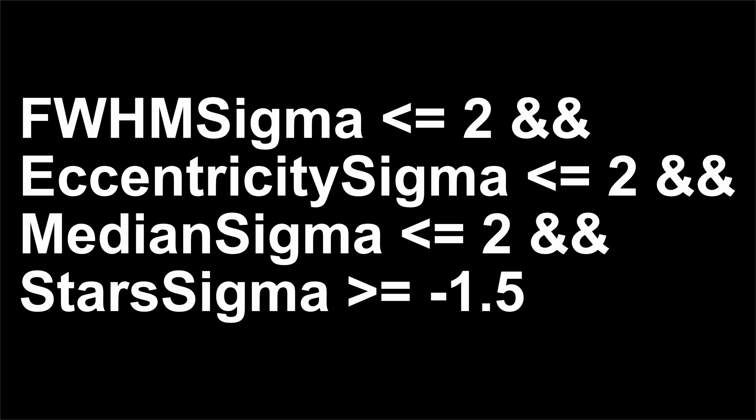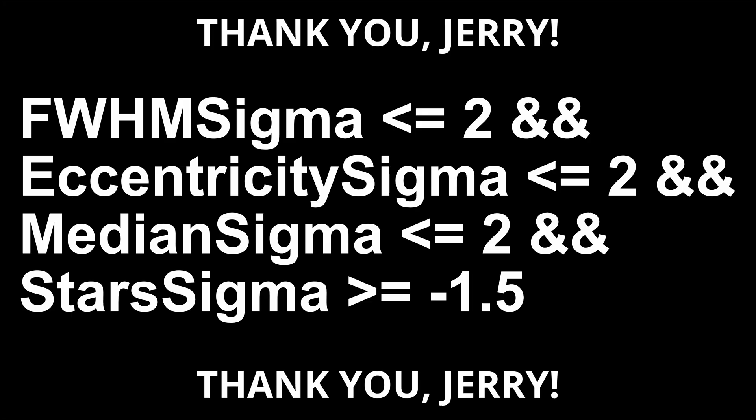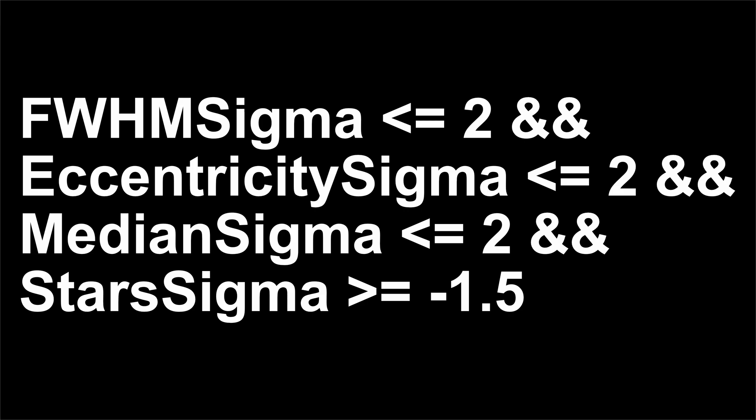A viewer on a previous video clued me into this when he noted that rather than looking for the specific values above the second standard deviation within the measurements window, in the expressions window I could just enter the sigma — telling the subframe selector where in the standard deviations it should begin to reject subframes. Sigma refers to a standard deviation. The first expression, FWHM sigma less than or equal to 2, refers to full width half maximum, or focus, and tells the subframe selector to reject any subs in which the stars are above the positive second standard deviation out of focus.